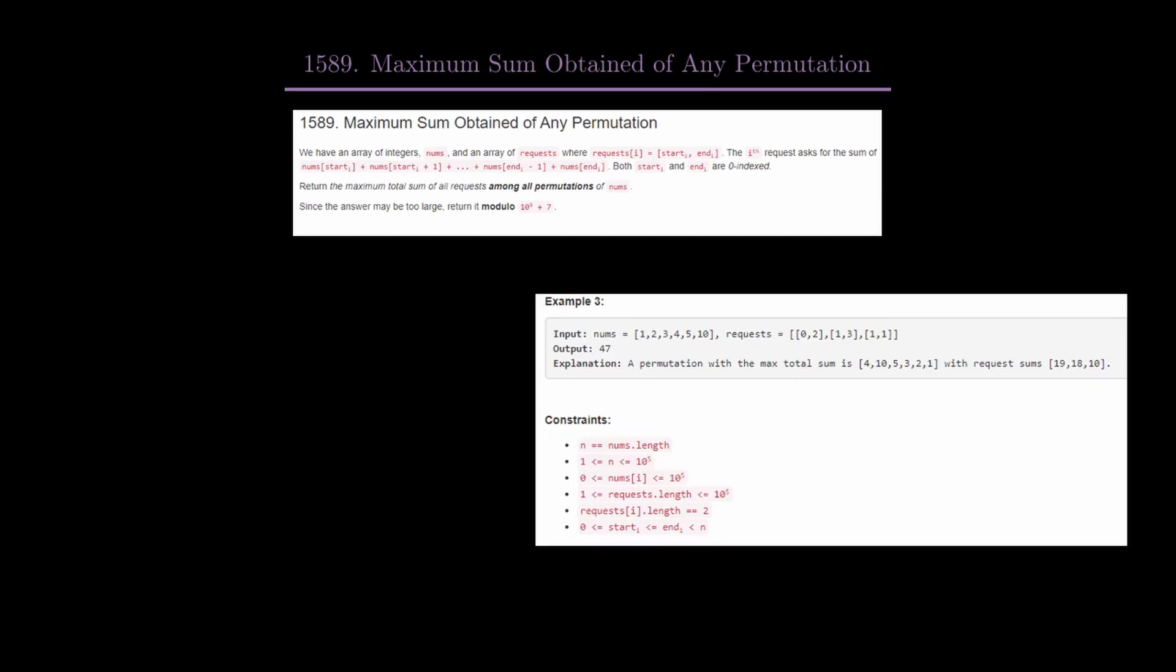In the third example, we have this nums array and the requests array. There are three requests: (0,2), (1,3), and (1,1). This is one of the permutations of nums.